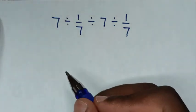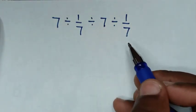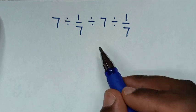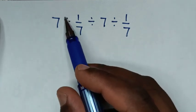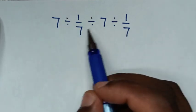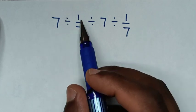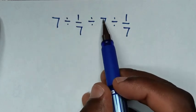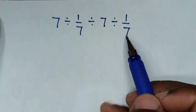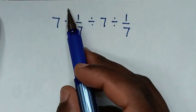Hello, welcome. We'll solve this math problem on orders of operations, where we have only division operations: 7 divided by 1 over 7, divided by 7, divided by 1 over 7. In the first step, we'll start with the first operation.